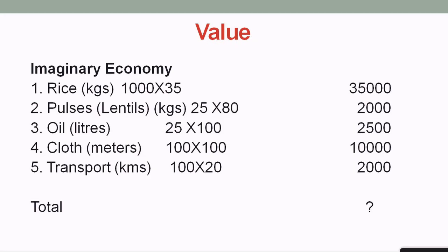So what does 'value' mean in the GDP definition? I am giving you a small exercise with an imaginary example. In this example, a country produces 1000 kilograms of rice. This has to be converted into one single value. If the rice price is 30 rupees per kilo, then 1000 kilos gives 30,000 rupees. Similarly, pulses — if 80 kilograms are produced, you convert by the price and get 2000. Similarly for oil, you calculate price value. So rice, pulses, oil, cloth, transport — all are converted to a single monetary value.